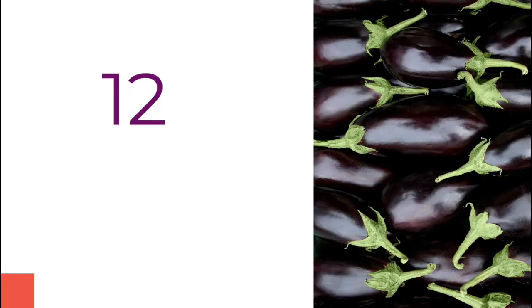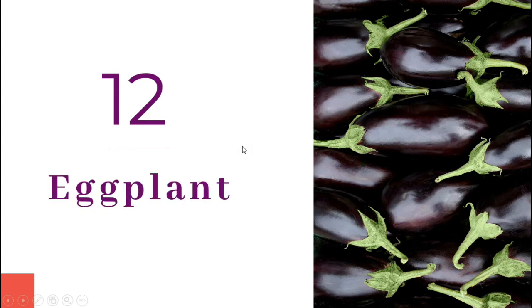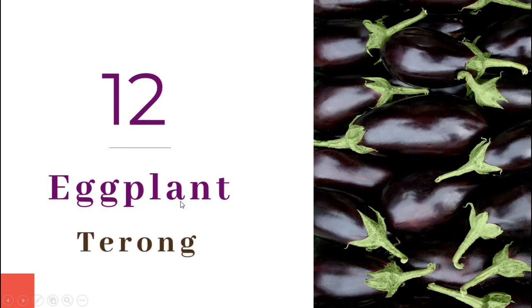Sekarang kita ke sayuran terakhir. Di sini ada sayuran yang berwarna ungu. Namanya adalah eggplant. E-G-G-P-L-A-N-T. Eggplant, atau terong.